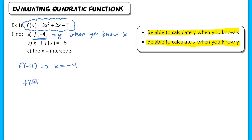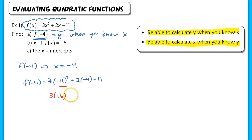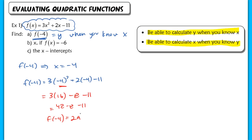Into my function, I plug in −4: I have 3 times (−4)² plus 2 times (−4) minus 11. The only area where I see lots of mistakes is when you square this negative — it will be a positive 16 multiplied by 3, then minus 8 minus 11. So we have 48 minus 8 minus 11. f(−4) equals 40 minus 11, which is 29. So really, you have a coordinate: (−4, 29).